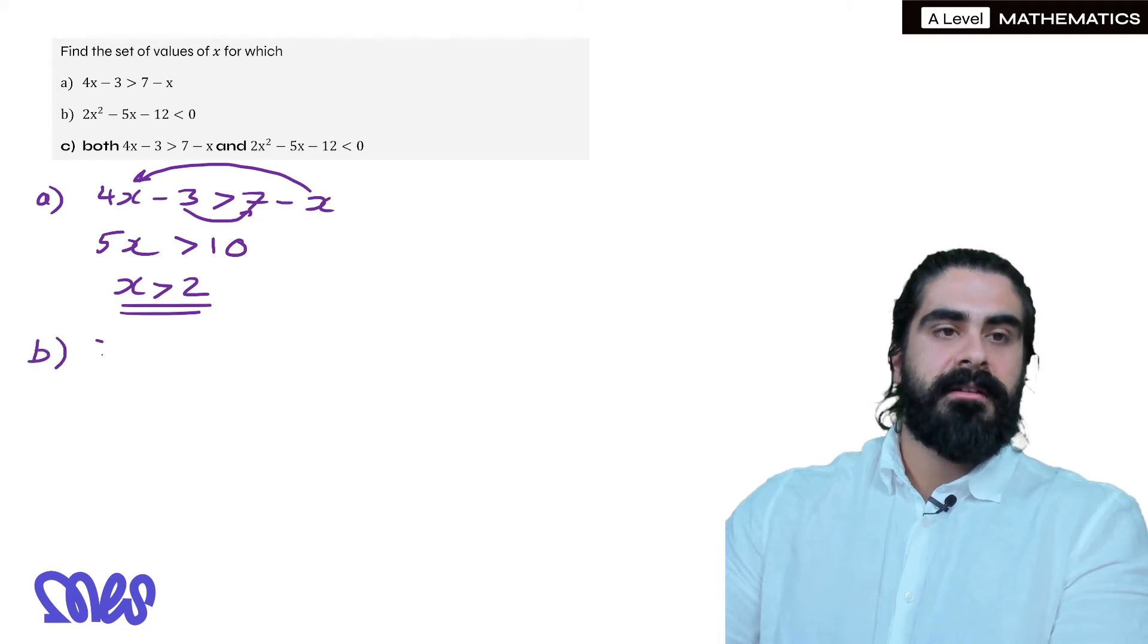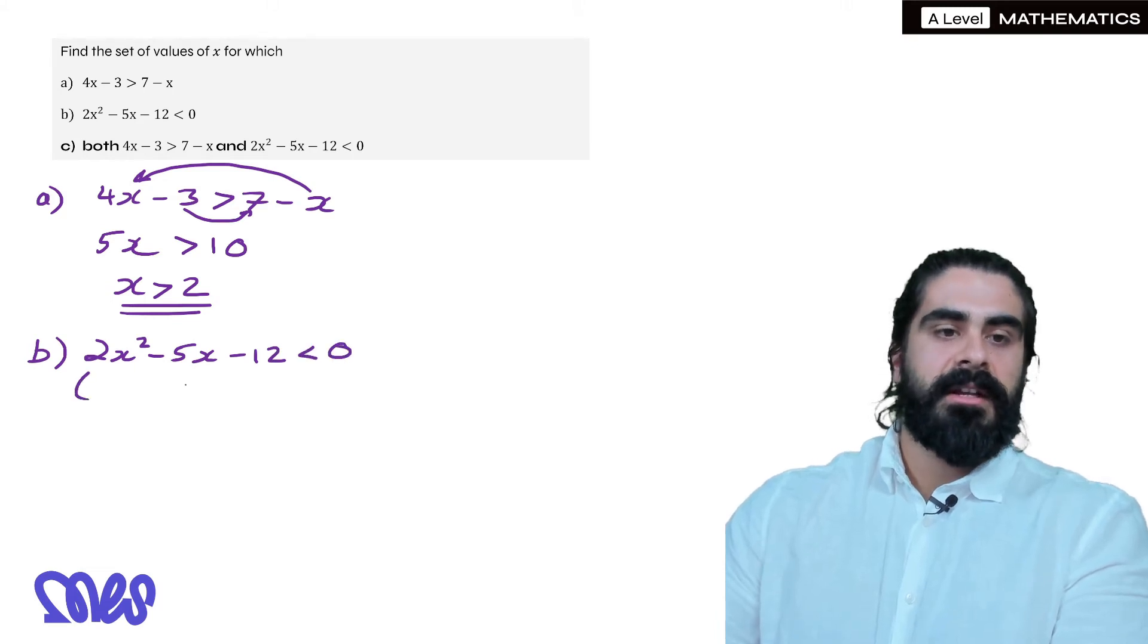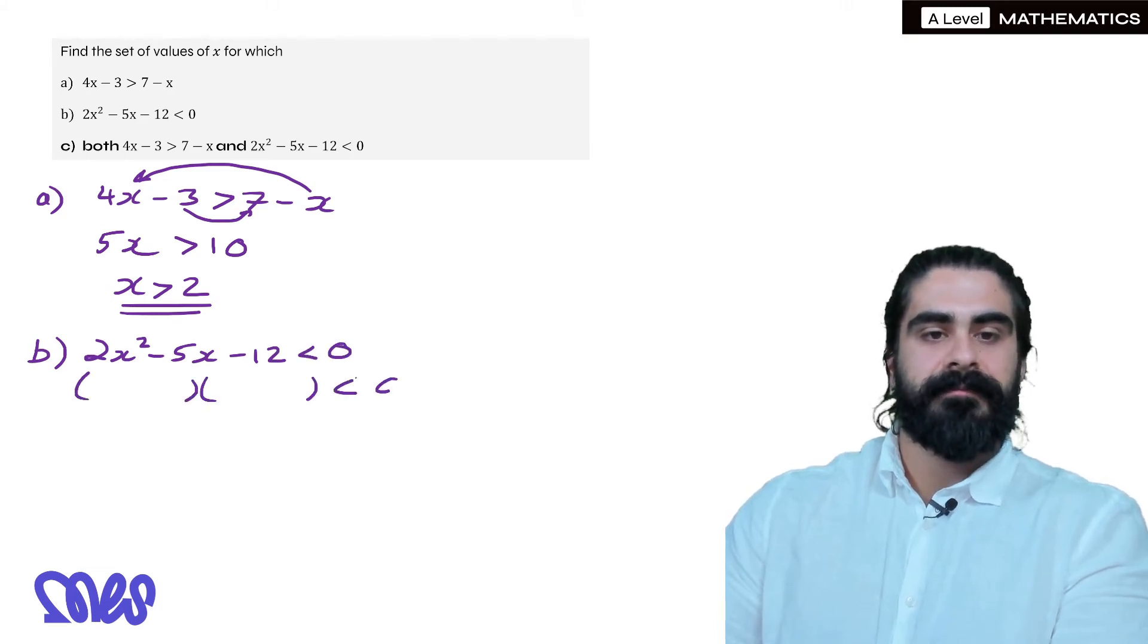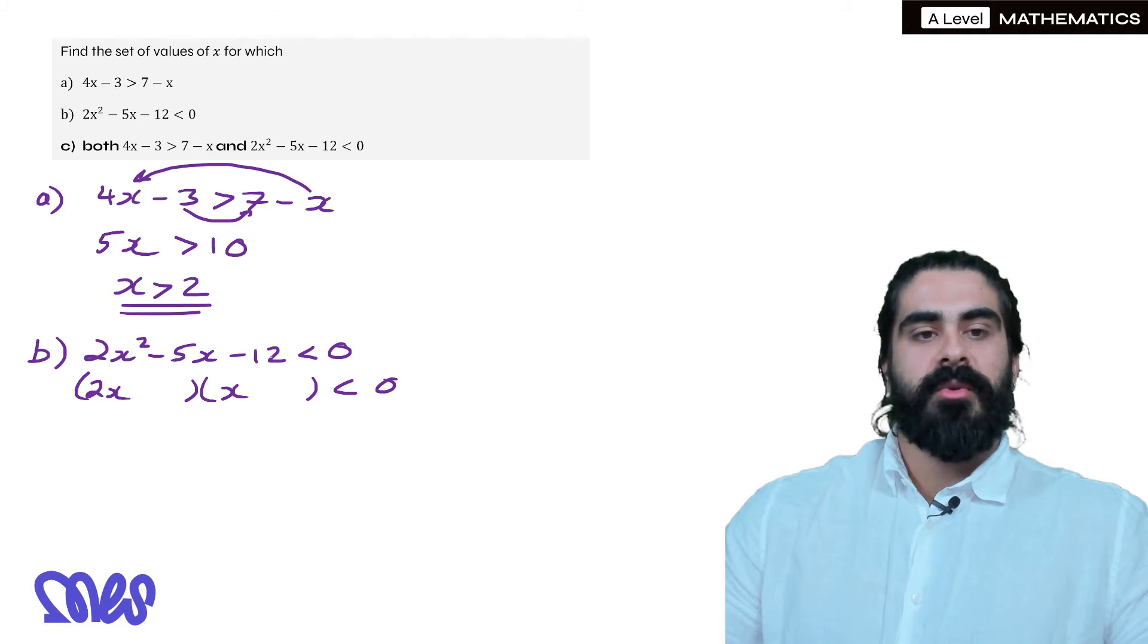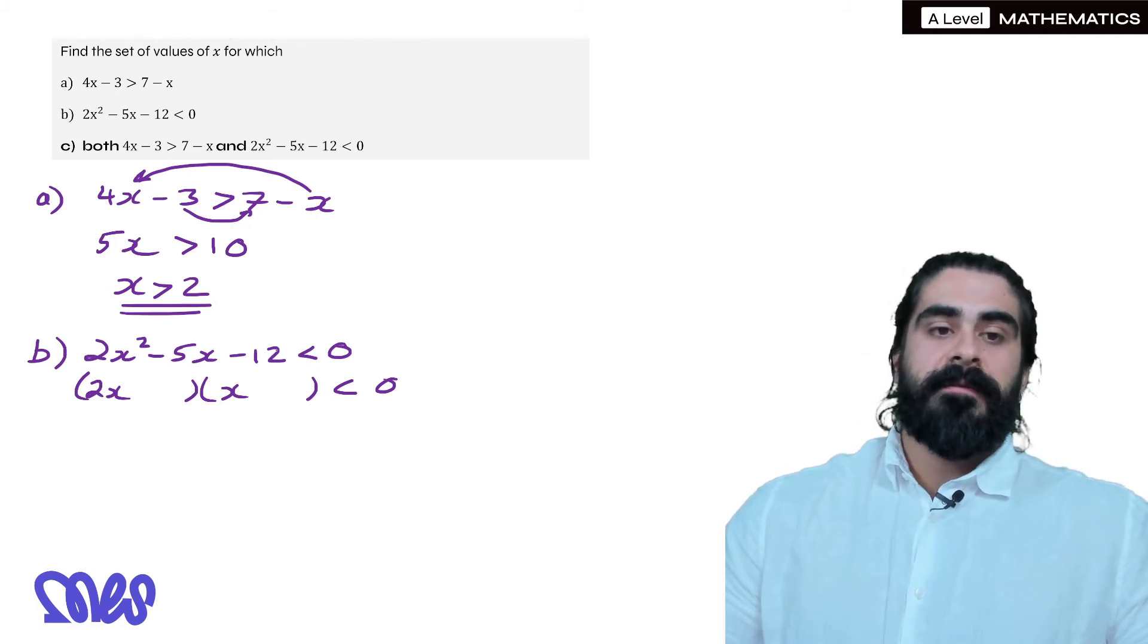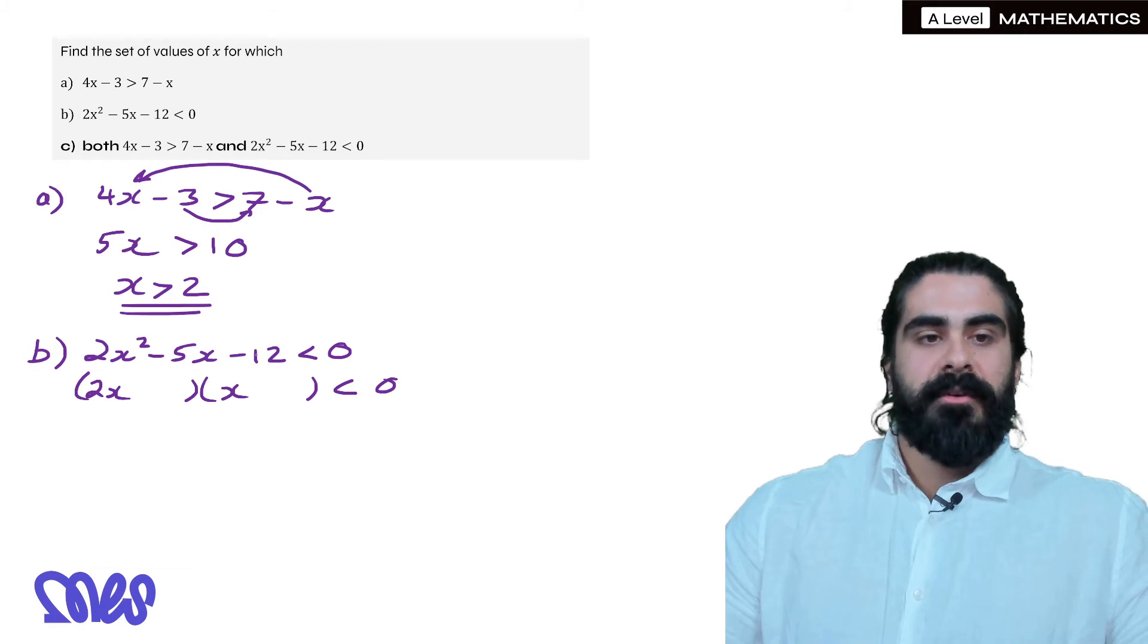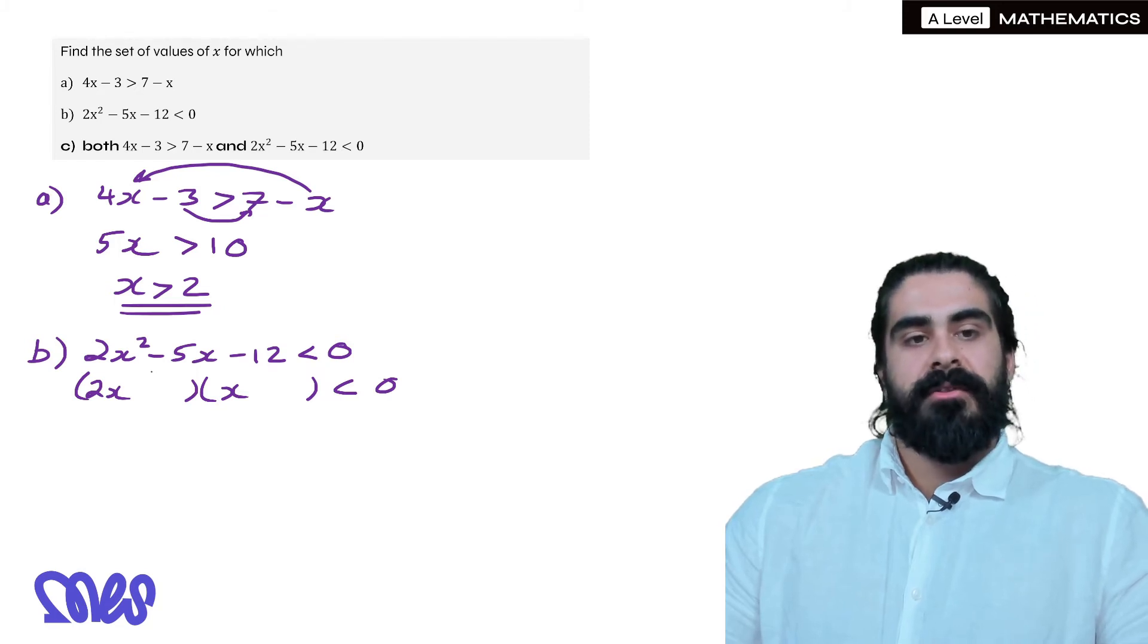The next one, part b, 2x squared minus 5x minus 12 is less than 0. We're going to again find our roots. So we have 2x and x. Now for 12, we have various options, we have 1 and 12, 2, 6 and 3 and 4. It definitely can't be 2 and 6 because they're both even numbers, and no even number can go in the first bracket. So it feels like it's going to be 3 and 4.